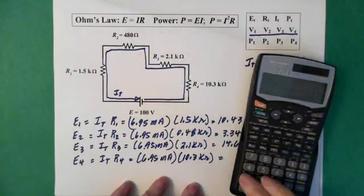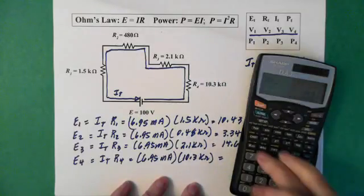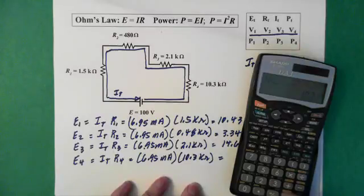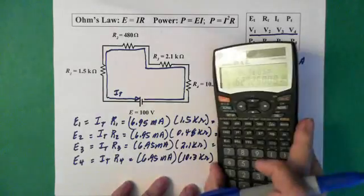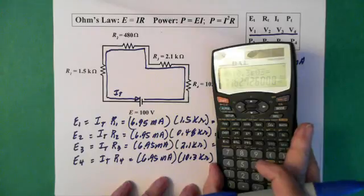Grab our current again from memory, multiply it by 10.3 exponent 3 equals 71.63 volts.